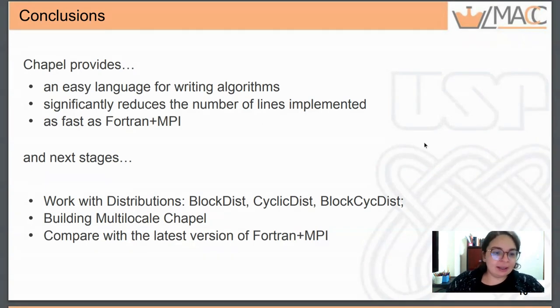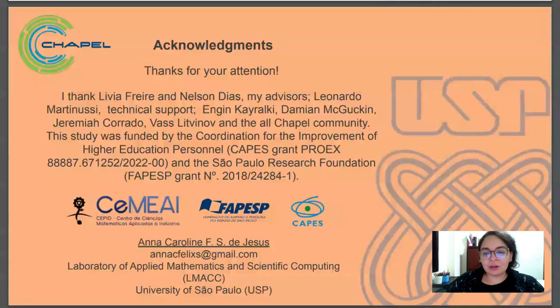Chapel provides an easy language, reduces the number of lines implemented, it is faster than Fortran and MPI. We cannot yet update the MPI simulation on time for a new GCC version. We are currently trying to expand Chapel for more locales and to choose the decompositions with distributions, for example using the block dist, but we still need some technical support for that.